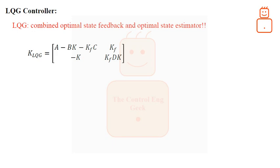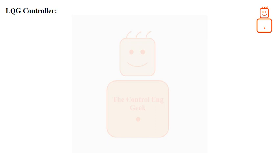The state-space realization of the LQG controller, from the output Y to the control action U, is shown here. It is assumed that the LQG has a positive feedback control action of K_LQG multiplied by the estimate of the state. Note that the LQG controller has the same degree, or same number of poles, as the plant.